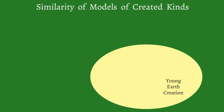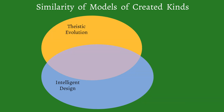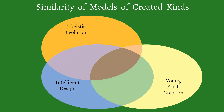If we start a Venn diagram, we can see that young earth creationism is one of the major categories for a model of created kinds. It can have significant overlap with the intelligent design model of created kinds, which can overlap significantly with theistic evolution models, but that has very little overlap with young earth creation models. In the middle of this diagram, they can agree that some type of guided process is occurring.